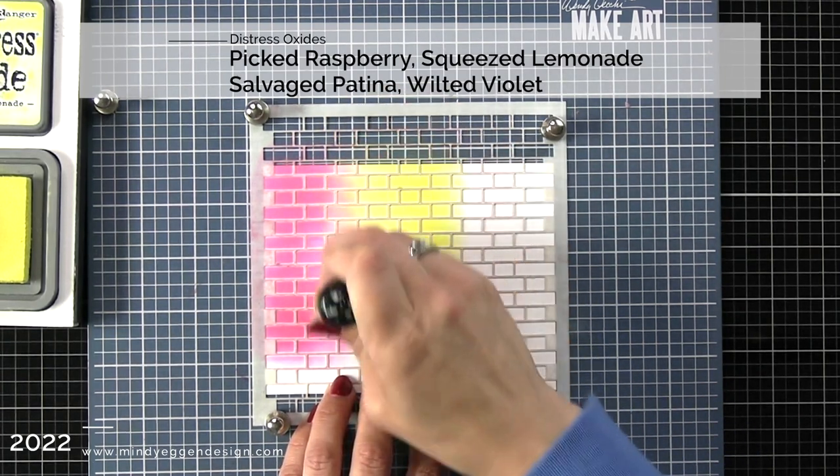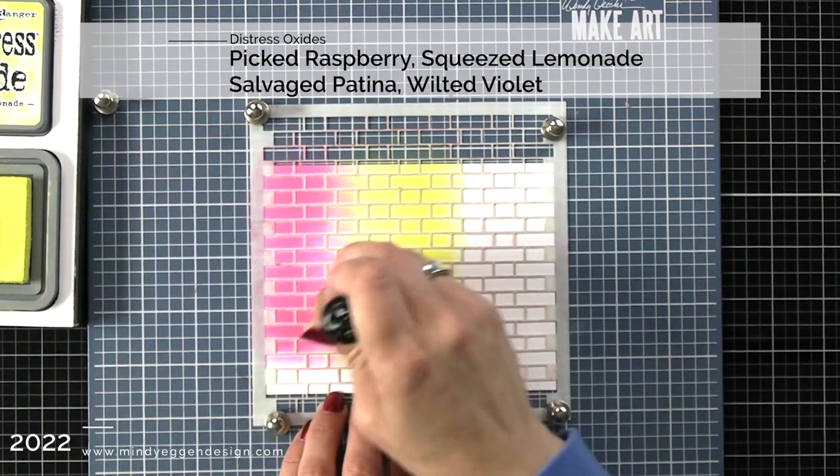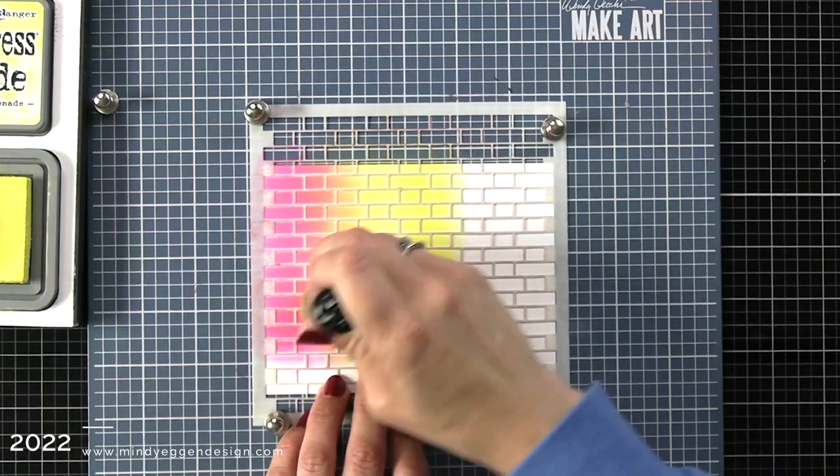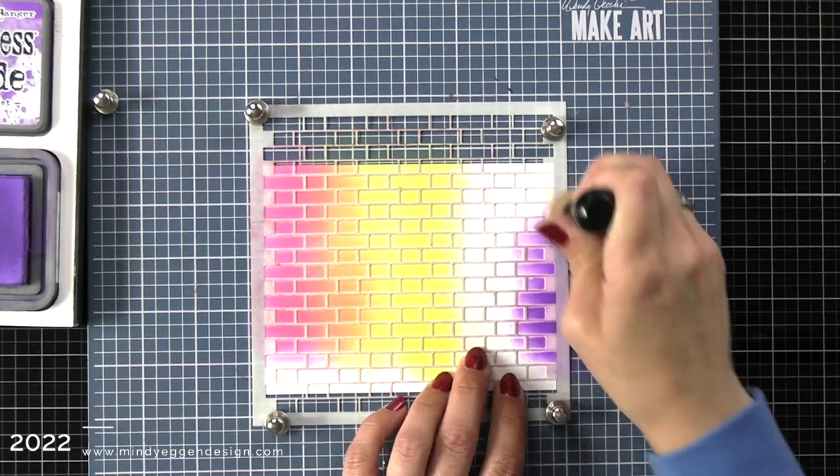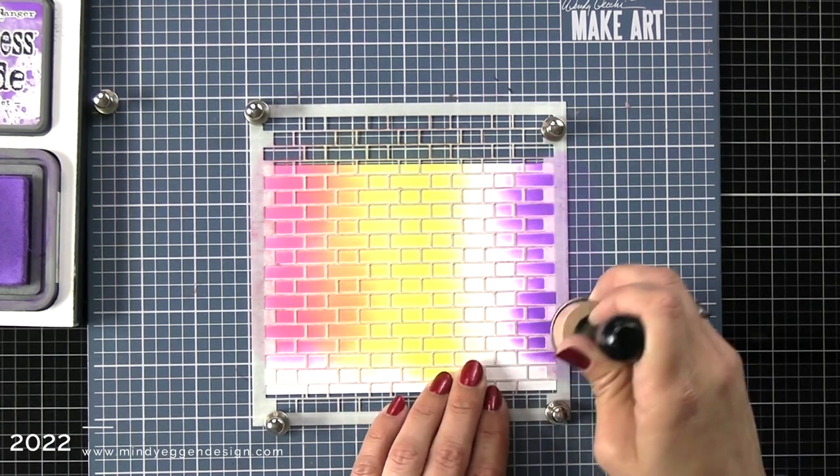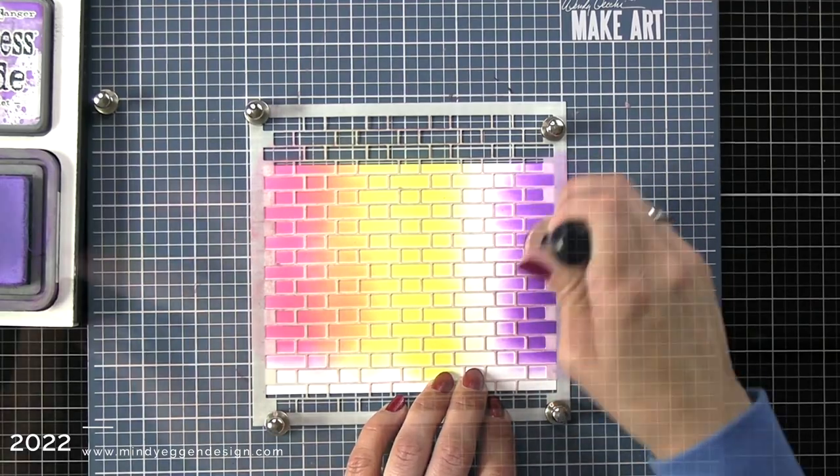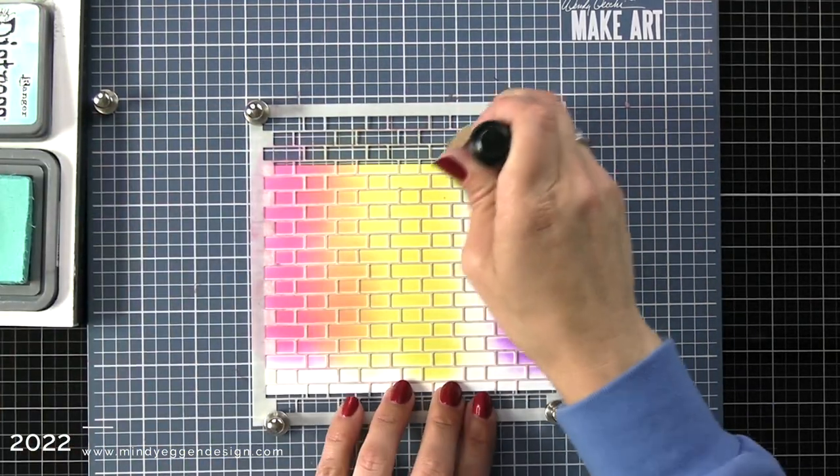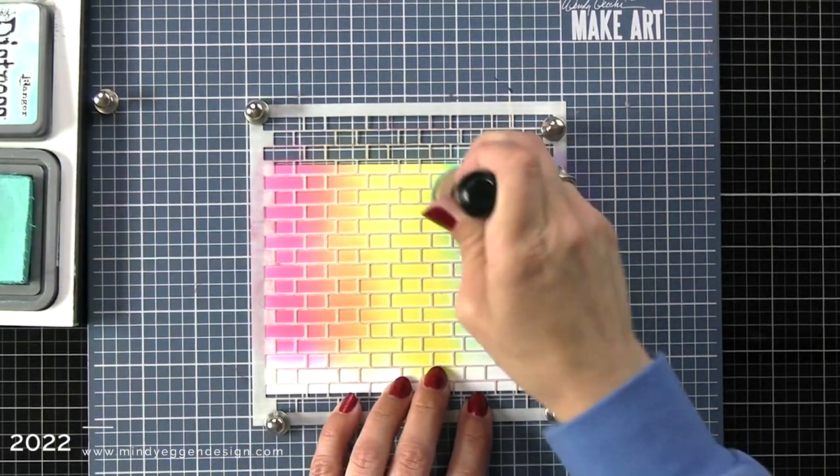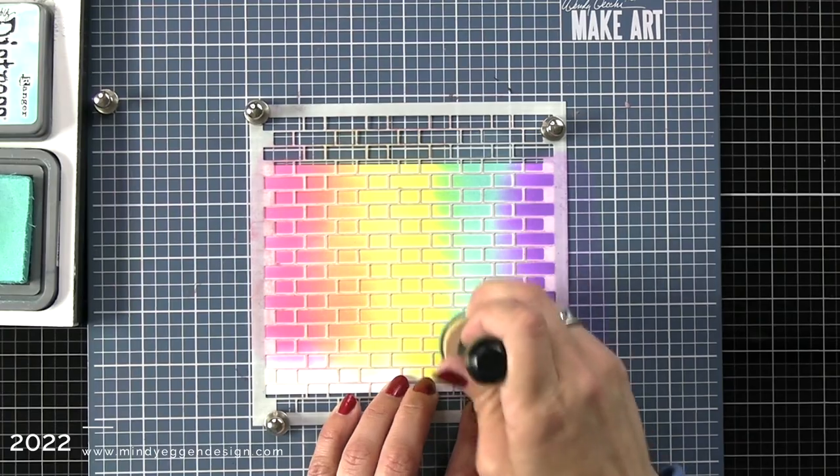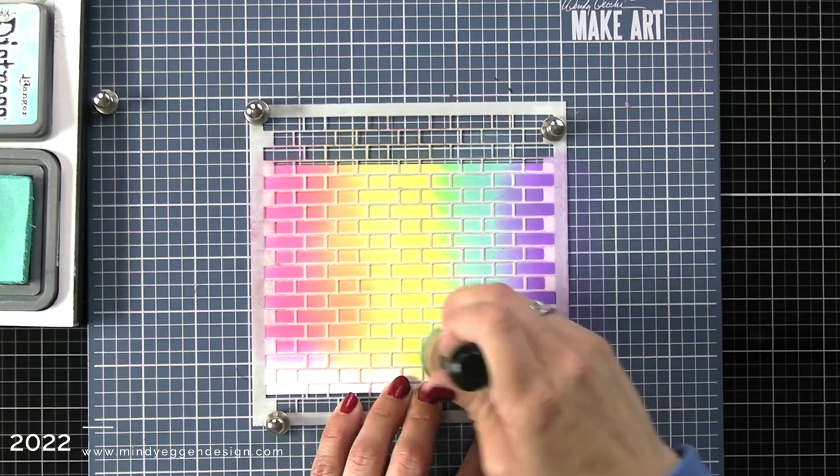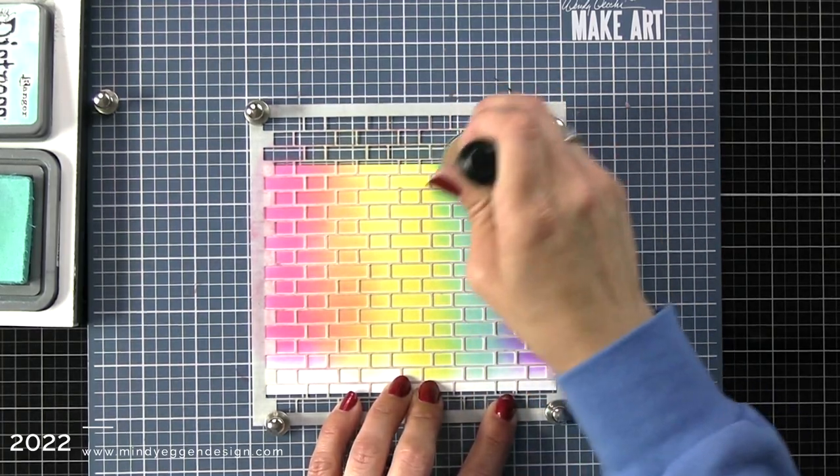When picked raspberry and squeezed lemonade overlap, it's going to give me that orange, so I'll be able to get the whole rainbow in here. It's about this point that I remember I always kind of leave out wilted violet. It doesn't get enough room. So I went to the end before adding my blue and I added that purple to make sure I was getting it in my rainbow. Then I came in with salvaged patina and added that. When I overlap with squeezed lemonade, I'm going to get this really bright limey shade of green, and I just love when salvaged patina overlaps with wilted violet.